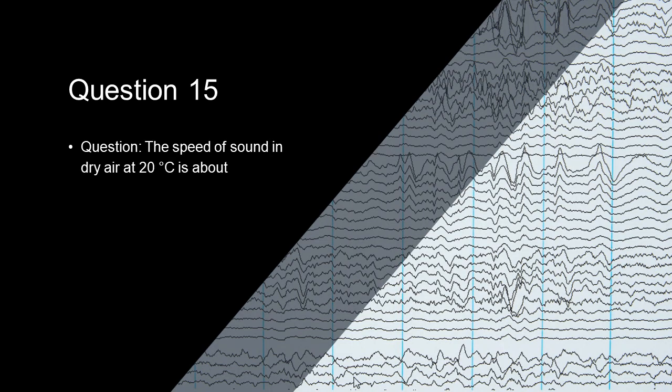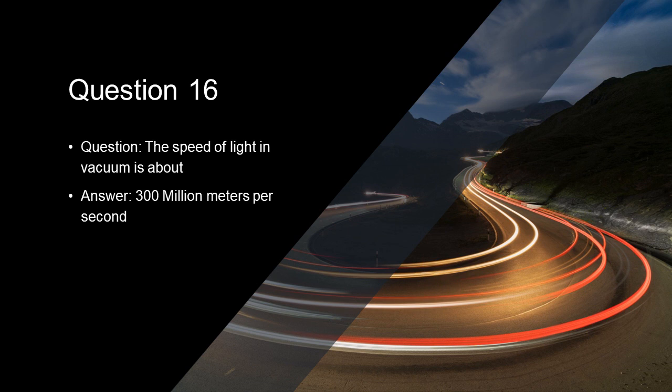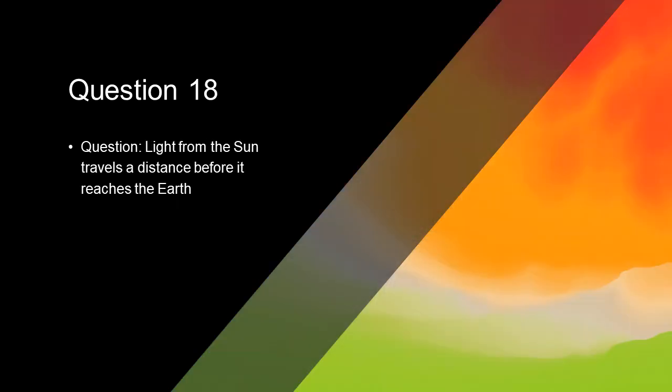The speed of sound in dry air at 20 degrees centigrade is about 330 meters per second. The speed of light in vacuum is about 300 million meters per second. The time light takes from the sun to reach earth is 8 minutes 20 seconds. Light from the sun travels a distance of 150 million kilometers before it reaches the earth.